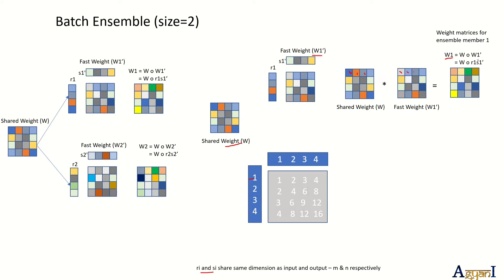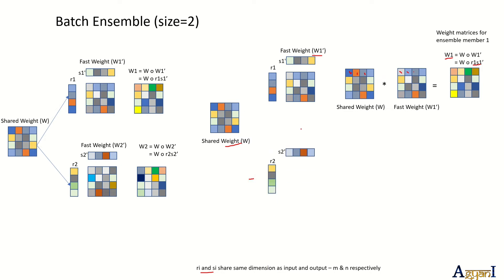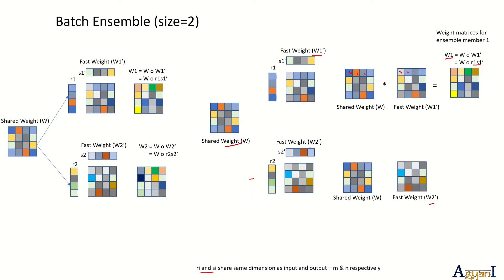For ensemble member two, you do the same approach: define another set of rank-1 vectors r2 and s2, compute fast weight W2, and then do element-wise multiplication with the same shared weight to get the weight matrix for ensemble member two. In Deep Ensemble, each member requires a full-size copy of all parameters, but in Batch Ensemble you only need rank-1 vectors per member, which significantly reduces the parameter count as the number of layers and parameter sizes increase.